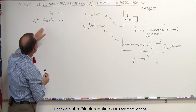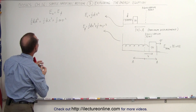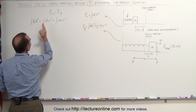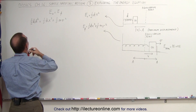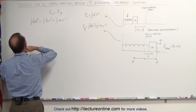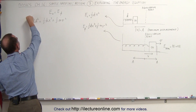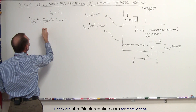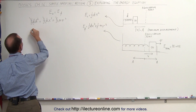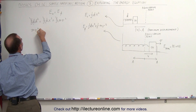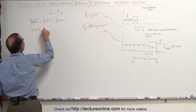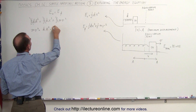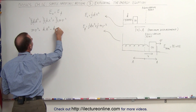If we now solve this equation for v, we need to move terms to the other side of the equal sign. Notice every term has a one half in it, so we can eliminate the one half from every term. Moving kx squared to the other side and turning the equation around gives us mv squared is equal to kA squared minus kx squared.